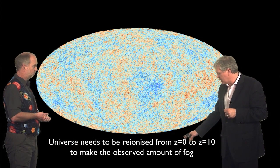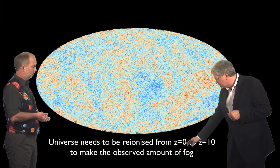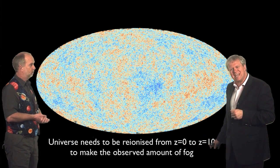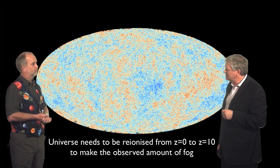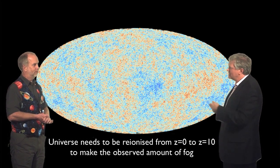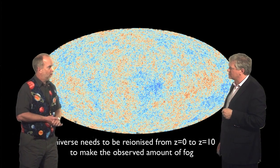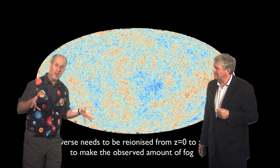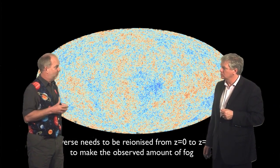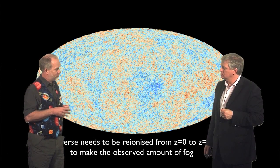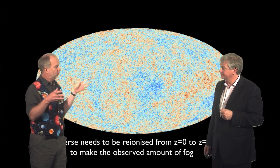And so when you do that calculation, it turns out the universe needs to be re-ionized, or needs to be ionized or re-ionized from a redshift of 0 to about 10. Now that 10 is a lot bigger than what seems to be indicated by the quasars. So if, as we thought from the quasars, everything was ionized around redshift 6, that wouldn't be enough to produce this.